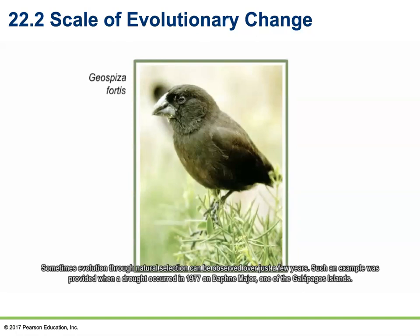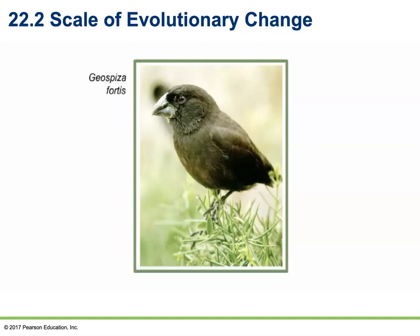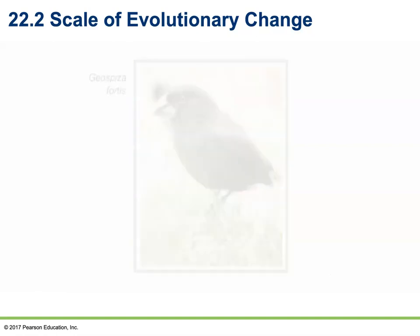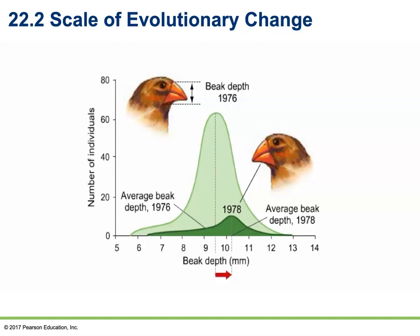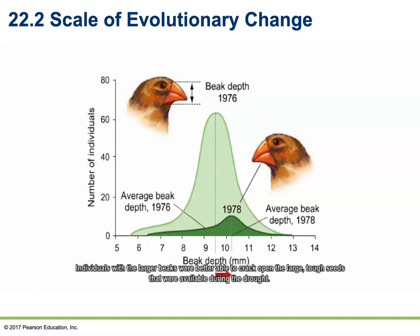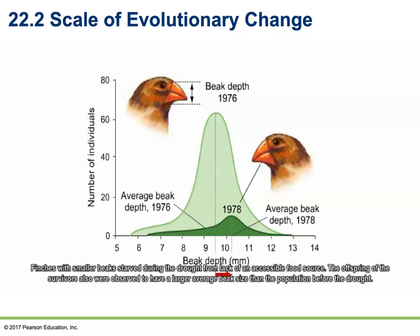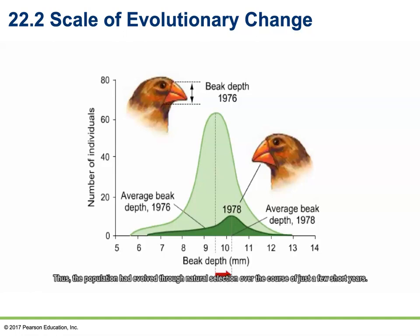Natural selection can sometimes be observed over just a few years. When a drought occurred in 1977 on Daphne Major, one of the Galapagos Islands, a large part of the population of the finch Geospiza fortis died. In 1978, it was observed that the average beak depth of survivors was greater than measured in a 1976 survey. Individuals with larger beaks were better able to crack open the large, tough seeds available during the drought, while finches with smaller beaks starved. The offspring of survivors also had a larger average beak size, showing the population had evolved through natural selection over just a few short years.